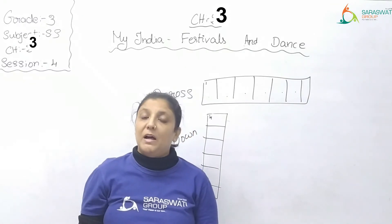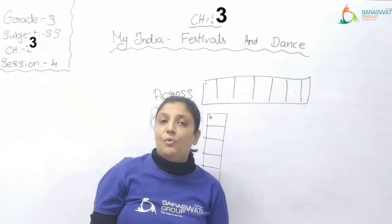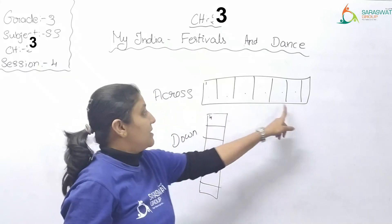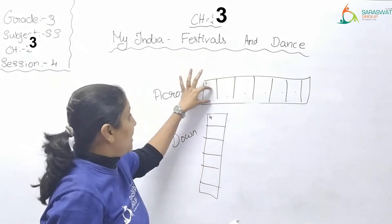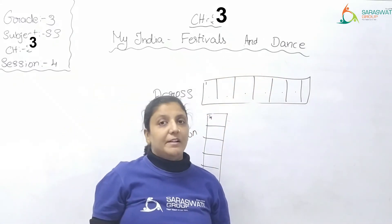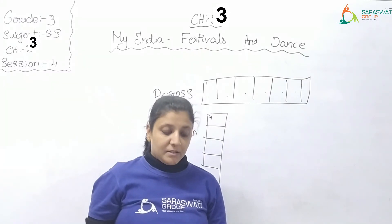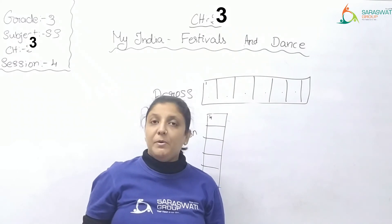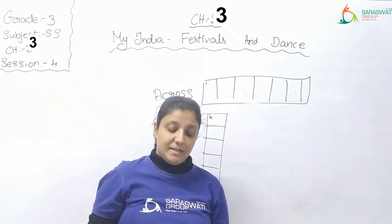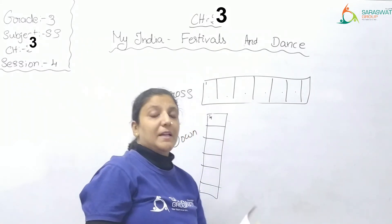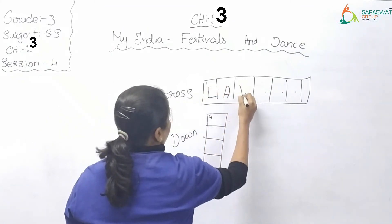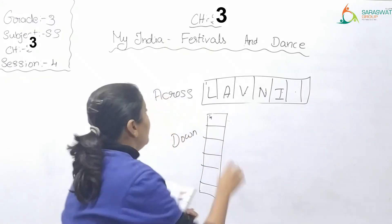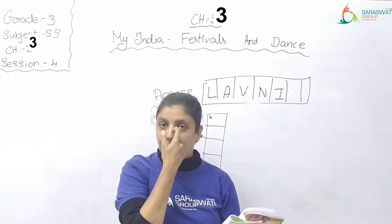For across answers, write one letter per box going horizontally. Number 1 across: The folk dance of Maharashtra — the answer is Lavni. Write L-A-V-N-I starting from box number 1. Number 2 across: Goddess Saraswati is worshipped on this day — the answer is Basant Panchami. Write without any space between Basant and Panchami.